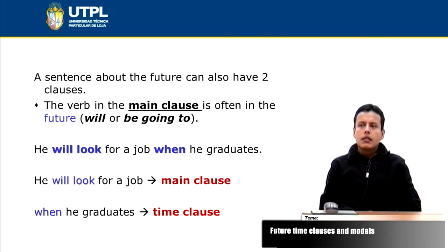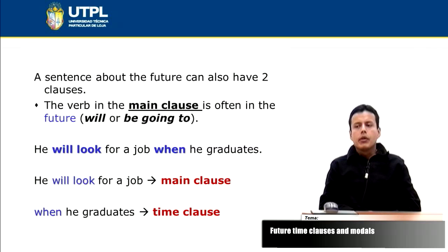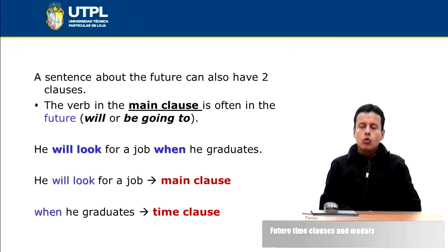Now about the clauses. A sentence about the future can have two clauses. The verb in the main clause is often in the future — we can use will or be going to. We have an example here: 'He will look for a job when he graduates.' In this case, we are joining two clauses.